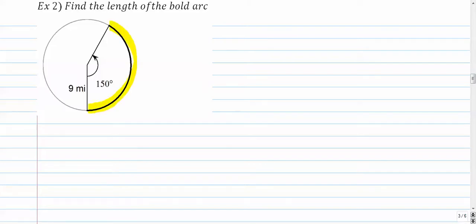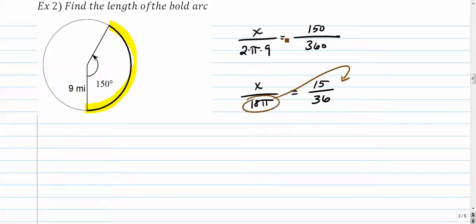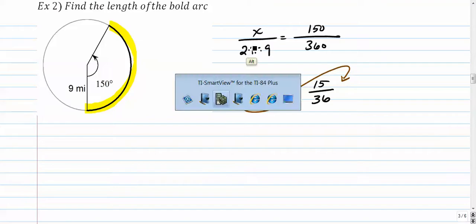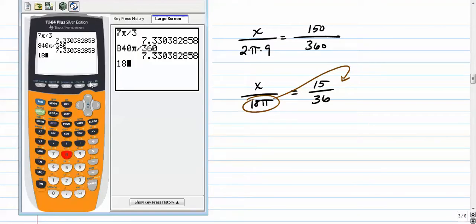Number two, find the length of the bold arc. I'll take my highlighter and I'll highlight it, trying to find this distance right there. So we set up our proportion: that's the length of the arc. Down here is 2 times π times the radius. Up here is 150, down here is 360. So 9 times 2 is 18π. I'll cut the zeros off and you can simplify a little bit more, but let's just bring this guy up here and put that into our calculator right away: 18 times π times 15 divided by 360.